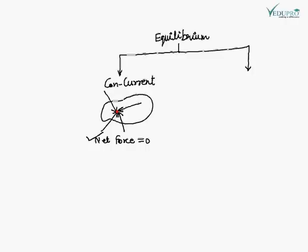تو concurrent forces کے case میں اگر net force zero ہے تو body equilibrium میں ہوگی، کیونکہ in this case net moment automatically zero ہوتا ہی ہوتا ہے۔ So when body is subjected to concurrent forces, we can say that for equilibrium: sigma Fx should be zero and sigma Fy should be zero. اگر sigma Fx اور sigma Fy دونوں zero ہوں گے تو body کسی بھی direction میں translate نہیں کرے گی۔